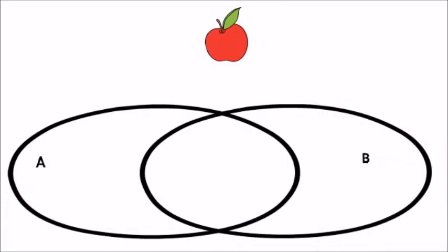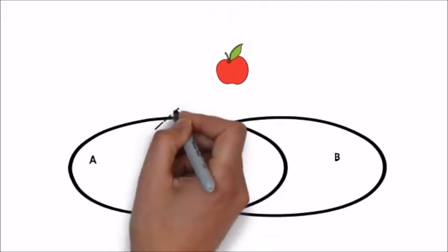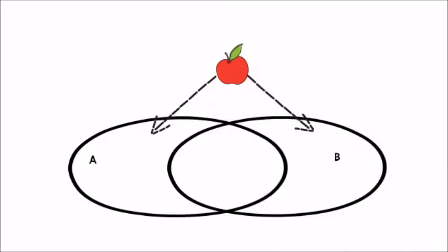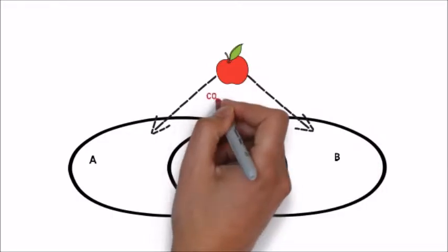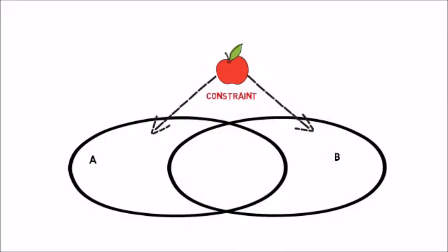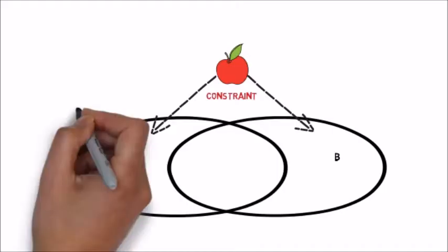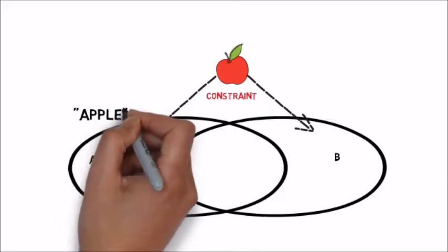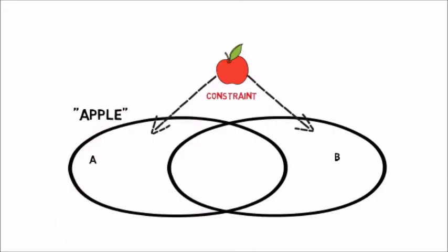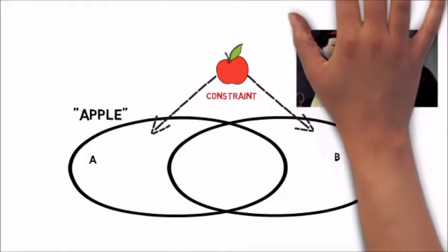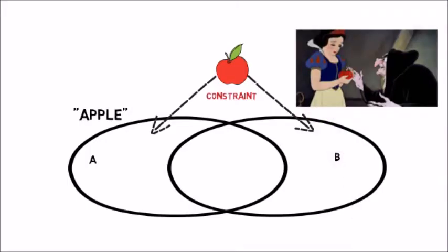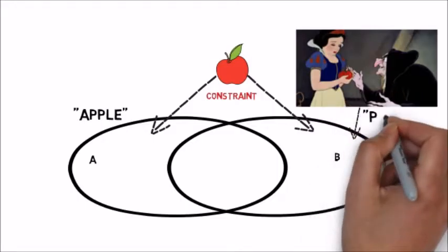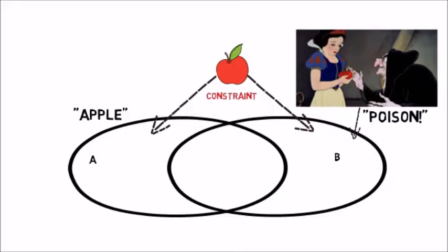Now I want to criticize this and suggest an alternative way of thinking about a shared object. We've got the same situation — person A and person B — but this time the shared object operates as a constraint on both person A and person B, and the overlap between them is an overlap of mutual constraint. The shared object, the apple, is one of many, many constraints which operate on person A and person B, and these constraints differ from person A to person B. So the use of the word 'apple' will constrain person A and person B differently — maybe person B has some historical association with apples which is rather different from person A's.